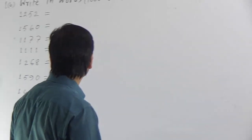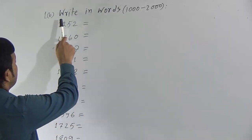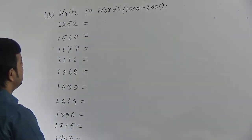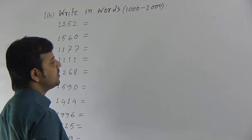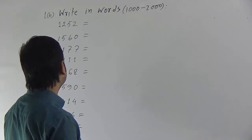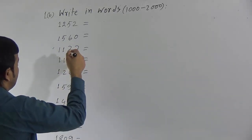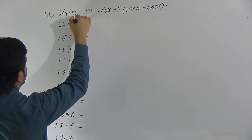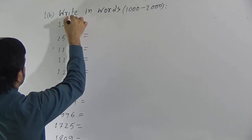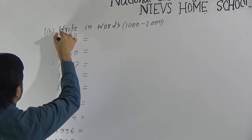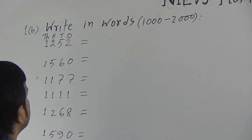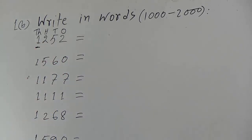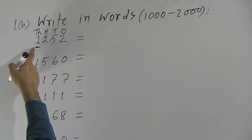Let us start our class. Our topic is 'Write in Words from 1000 to 2000.' Here I have written some numbers and I will write these numbers in words. To write numbers in words, you can use this technique: first, indicate the position of the digits — 1, 10, 100, 1000. The first digit is in the 1000's position, so we have to start from 1000.